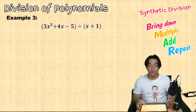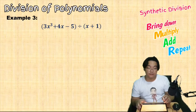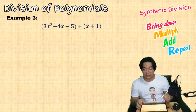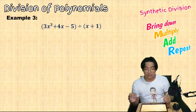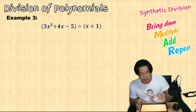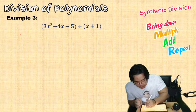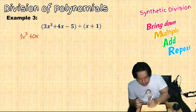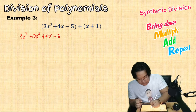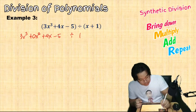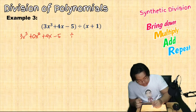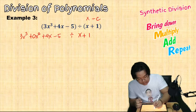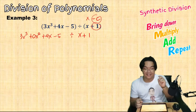Example three: 3x cubed plus 4x minus 5 divided by x plus 1. The degree is 3, so there should be 4 terms, but there's a missing x squared term. We arrange it as 3x cubed plus 0x squared plus 4x minus 5, divided by x plus 1. The divisor is in the form x minus C where C is negative 1.